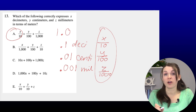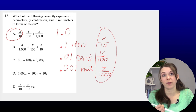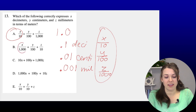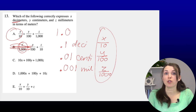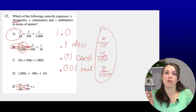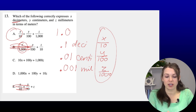Option B has X over 1,000, which would be millimeters, not decimeters — incorrect. Option E uses decimeter fractions for all except Z — incorrect. Options C and D go the opposite direction, using deca and kilo instead of deci, centi, and milli. So the answer is A.